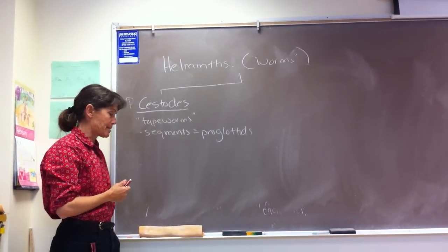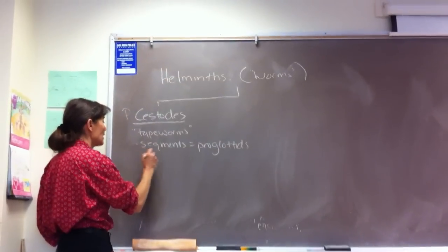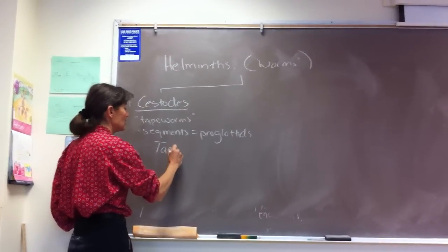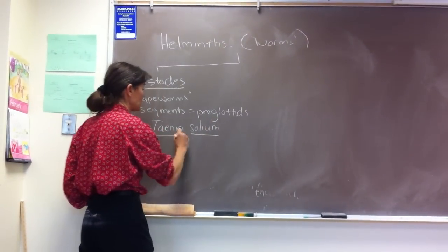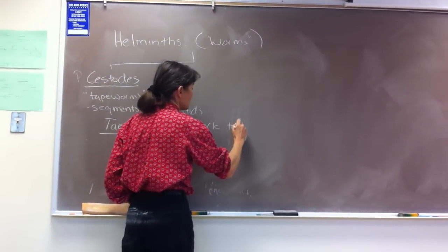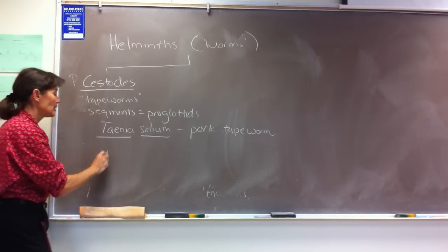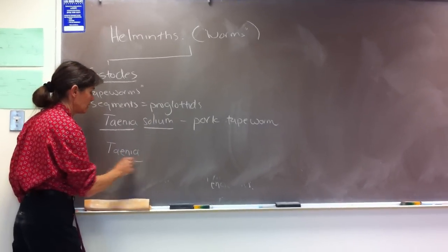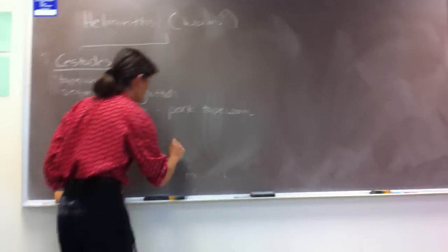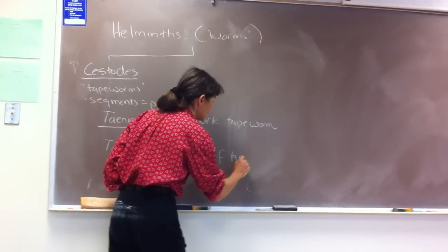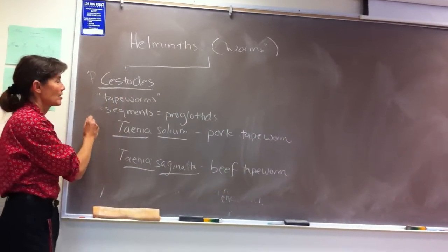The two examples of tapeworms we're going to have you take a look at, one you're already familiar with, Taenia solium, the pork tapeworm. A related species is Taenia saginata, the beef tapeworm. I'll set the stage here and then we'll come back and discuss life cycles.